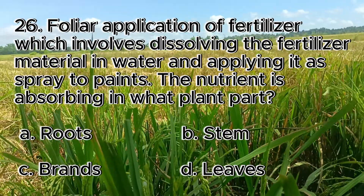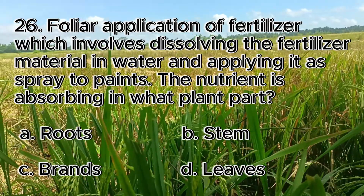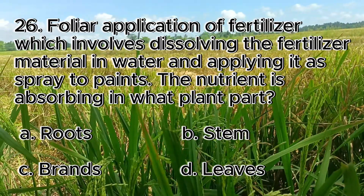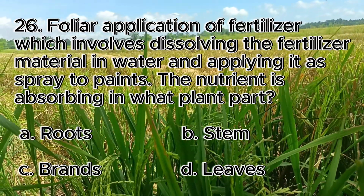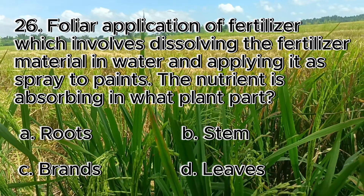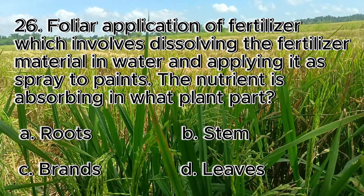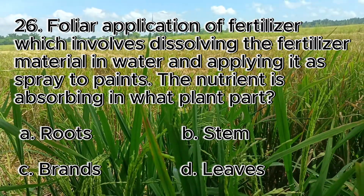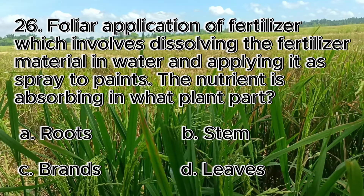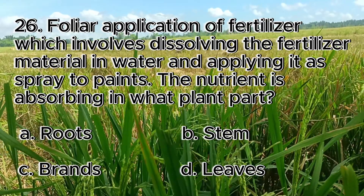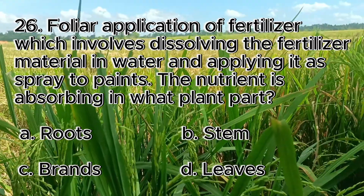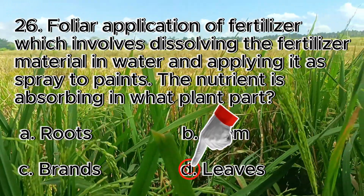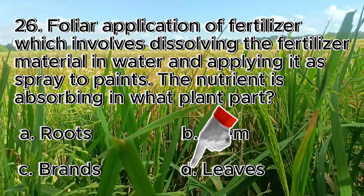Number 26. Foliar application of fertilizer involves dissolving the fertilizer material in water and applying it as spray to plants. The nutrient is absorbed through what plant part? A. Roots, B. Stem, C. Branches, D. Leaves. The answer is letter D, leaves.